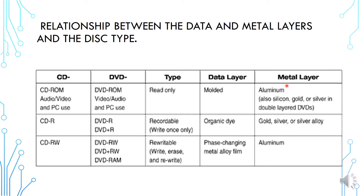For DVD-ROM, the data layer is molded and the metal layer is aluminum, or silicon, gold, or silver in double-layered DVDs. For DVD-R and CD-R, it is recordable — you can write once only. The data layer uses organic dye and the metal layer uses gold, silver, or silver alloy.